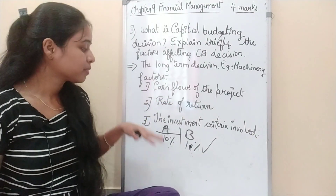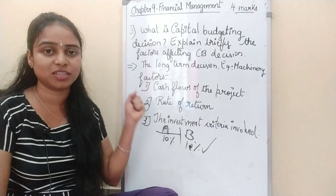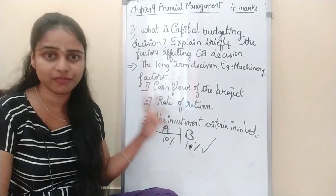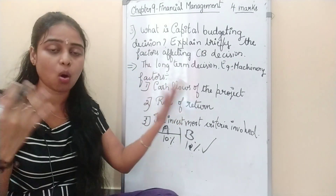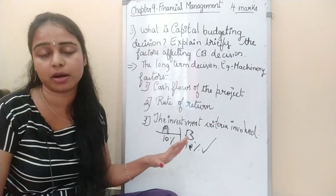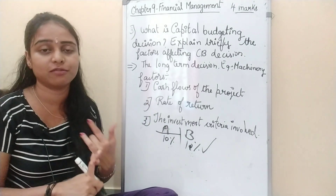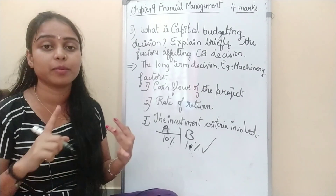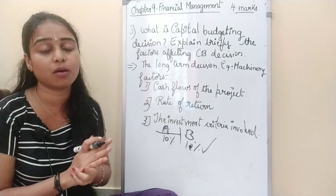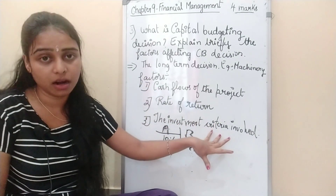The third factor is investment criteria involved. When we take big long-term investment decisions — whether on a machine, an expansion, or a new branch — there are many elements we need to consider: the amount of investment, the rate of interest, cash inflows, cash outflows, and so on. We have to consider a lot of investment criteria.